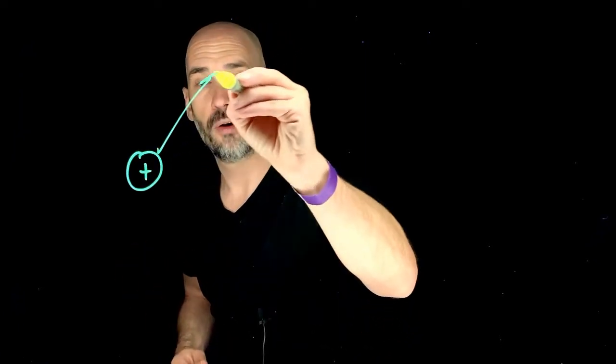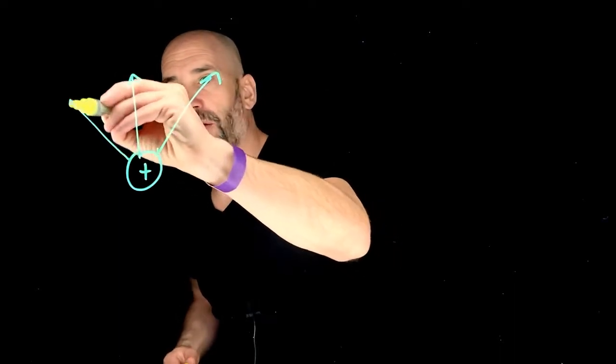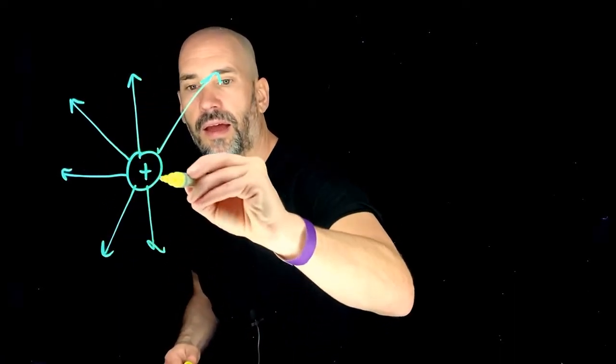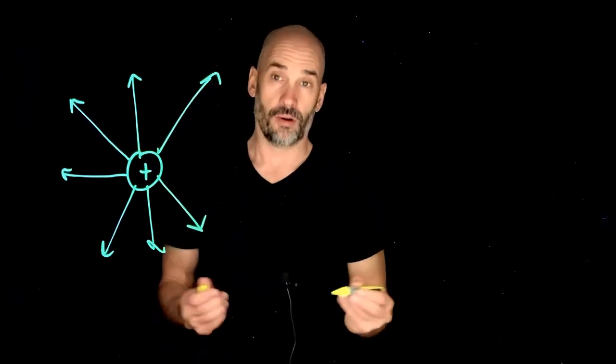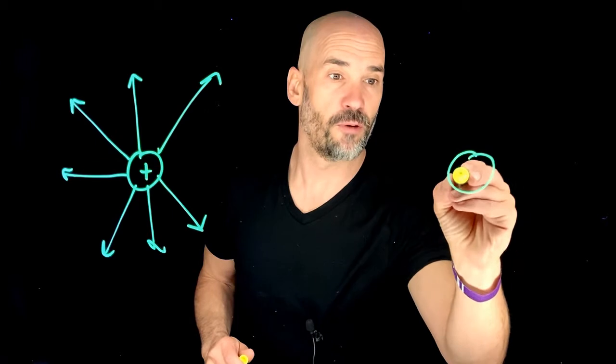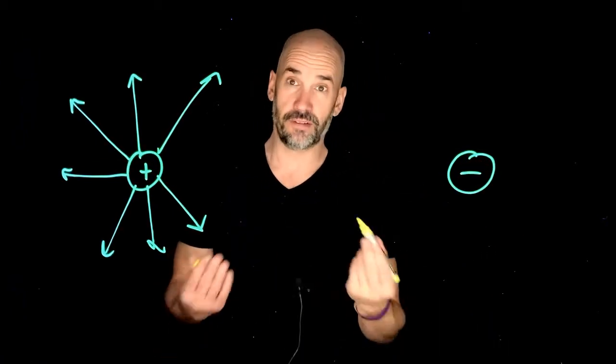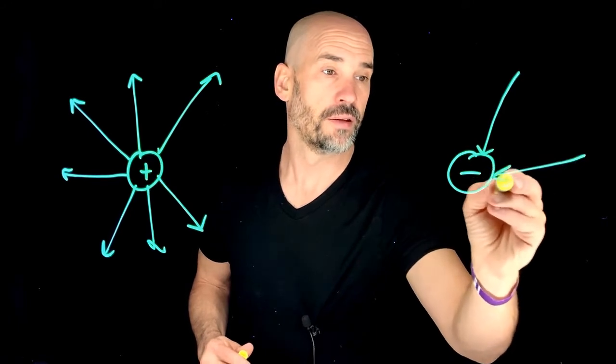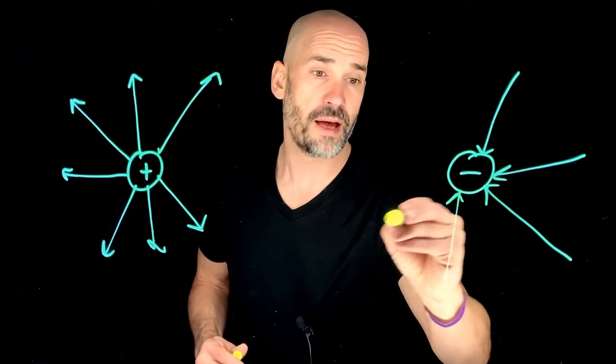There's really just two. So for a positive particle, we know that the electric field lines point away. We saw that in the last video. It always points away. And we know that the electric field lines for a negative particle, a negatively charged particle, always point towards that particle. Simple as that.